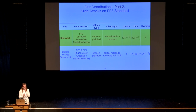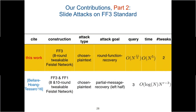We have a chosen plaintext and tweak attack for FF3 with given query and time complexity — this is a round function recovery attack. We were particularly interested in finding a query complexity less than N-squared, since N-squared is the size of the domain. Making more than N-squared queries essentially lets you obtain the entire codebook. So our aim is to do better than N-squared query complexity, using just two tweaks.